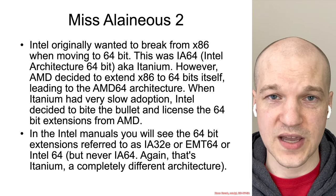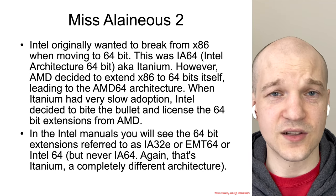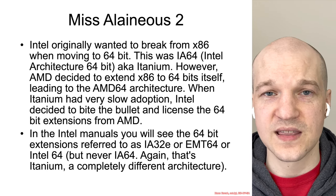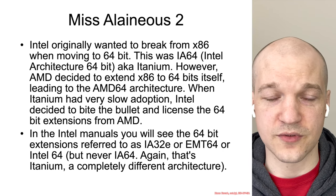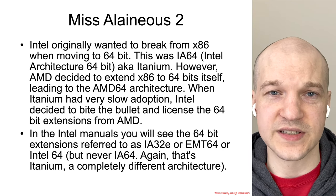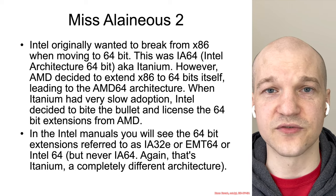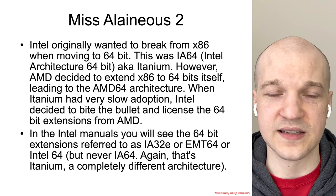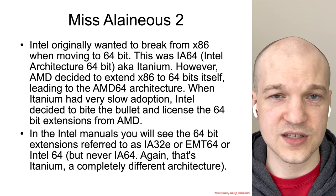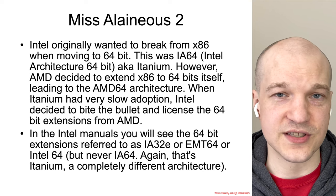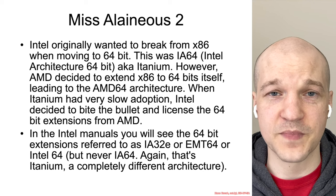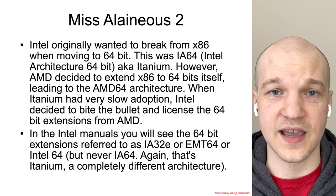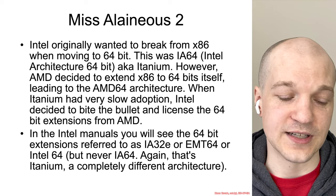When Intel was expanding x86 to be 64-bit capable, they ultimately wanted to make a complete break from the architecture — a clean slate and invent something new. This was called the Intel Architecture 64, also known as Itanium. But Itanium didn't really take off; it only saw some limited adoption on server-grade platforms. Ultimately, in parallel, AMD decided they would go ahead and extend the x86 32-bit architecture to support 64-bit, making the natural extensions to registers and instructions that you might expect. Ultimately Intel had to adopt and license this x86-64 extension when Itanium didn't take off.